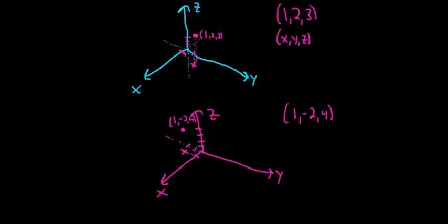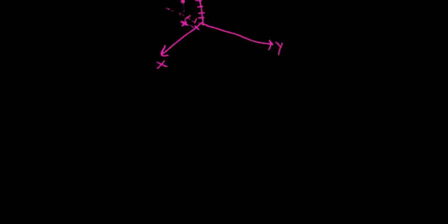And again, you can think of this as the little x as the projection onto that plane, right? Let's do another one. So this will be z, x, then y. Let's plot the point (2, 3, negative 4).